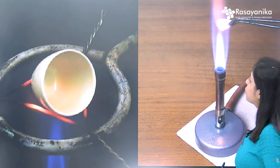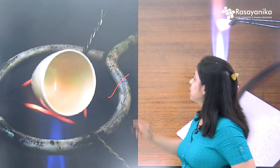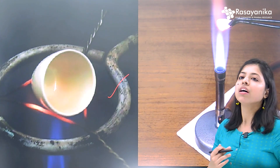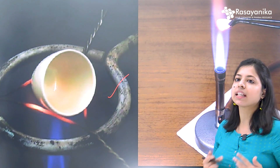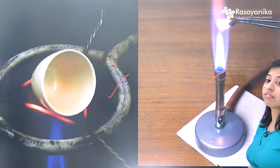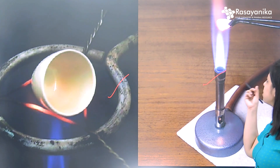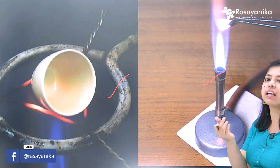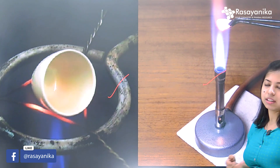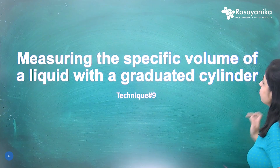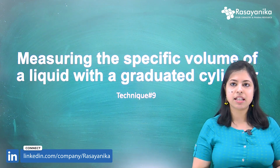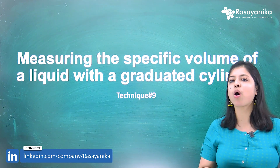Here you can see the crucible used to heat for a longer period of time to obtain a constant weight. In the flame test, you observe the change in color of the flame to recognize which radicals are present in the reaction mixture.